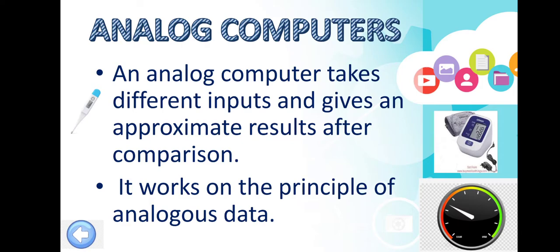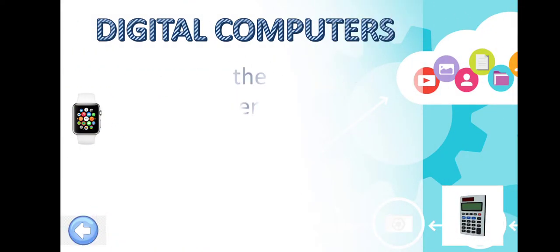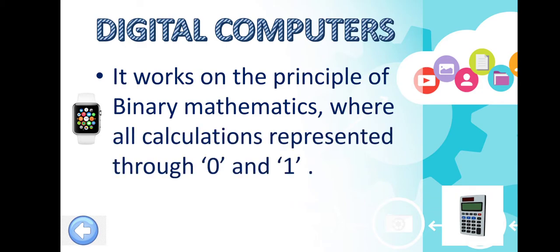Examples of analog computers are thermometers and speedometers. Next, digital computers work on the principle of binary mathematics, where all calculations are represented through zeros and ones.